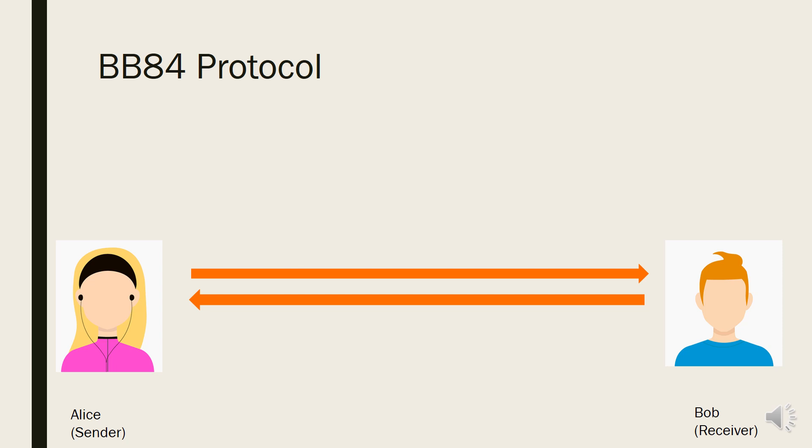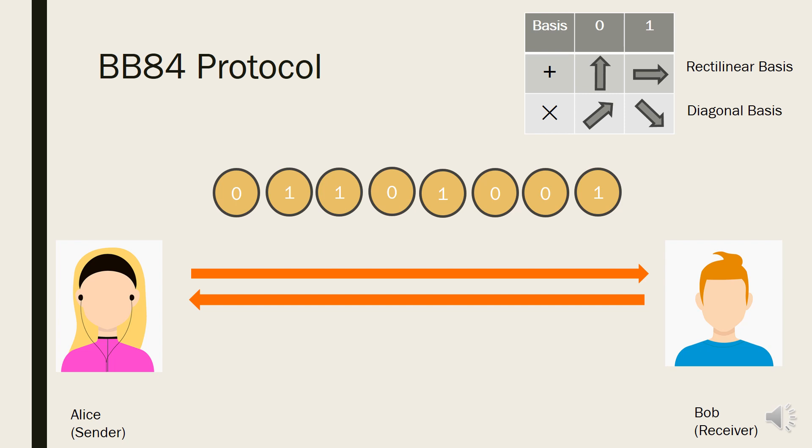First, Alice produces random bits. To convert these random bits to polarized signal to send to Bob, Alice chooses bases for each bit randomly by quantum random number. Here, the bases have two different kinds. Rectilinear bases encode 1 in horizontal 0 degree bit value and 0 in vertical 90 degree bit value. Diagonal bases encode 0 in diagonal 45 degree bit value and 1 in anti-diagonal 135 degree bit value.